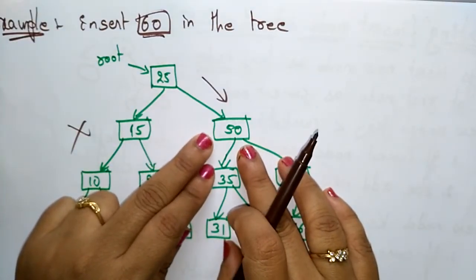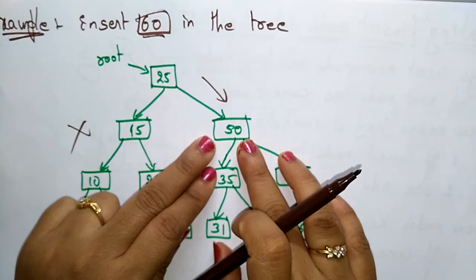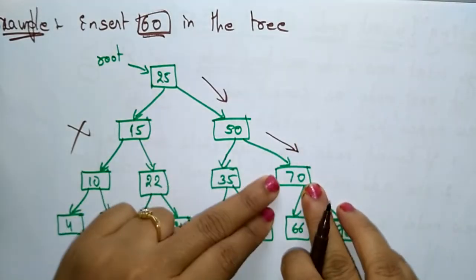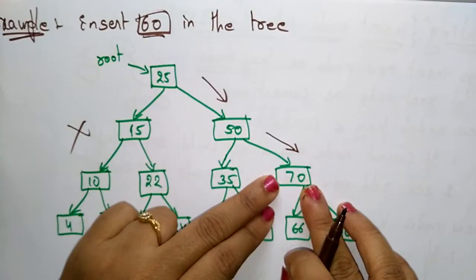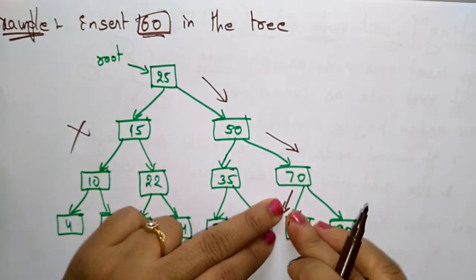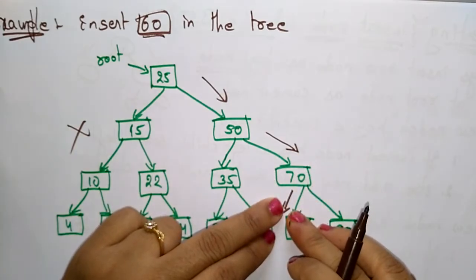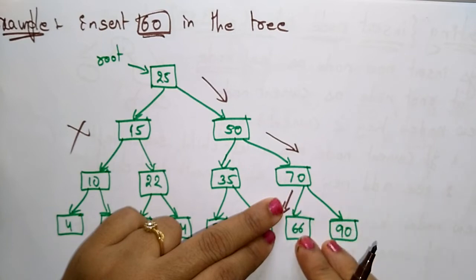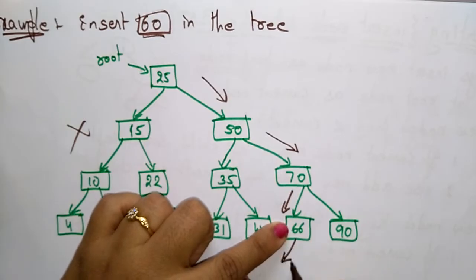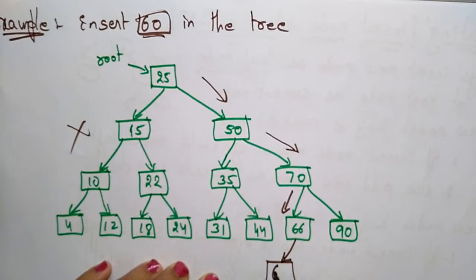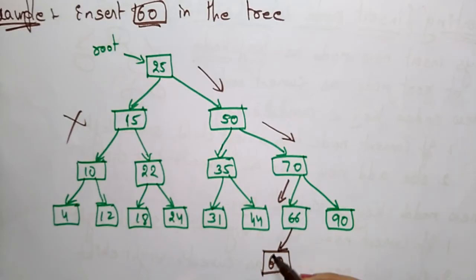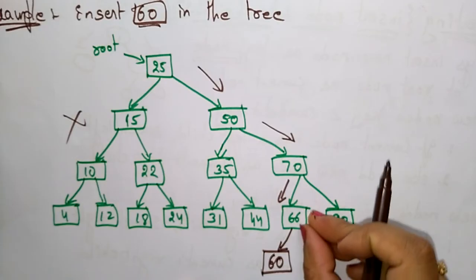Now check: 60 is greater than 50, so search again on the right side. Check again: 60 is less than 70, so come to the left subtree of 70. Here, 60 is less than 66, so go to the left side of 66. You have to add a node here and place 60, because 60 is less than 66 — place the new node on the left-hand side of 66.